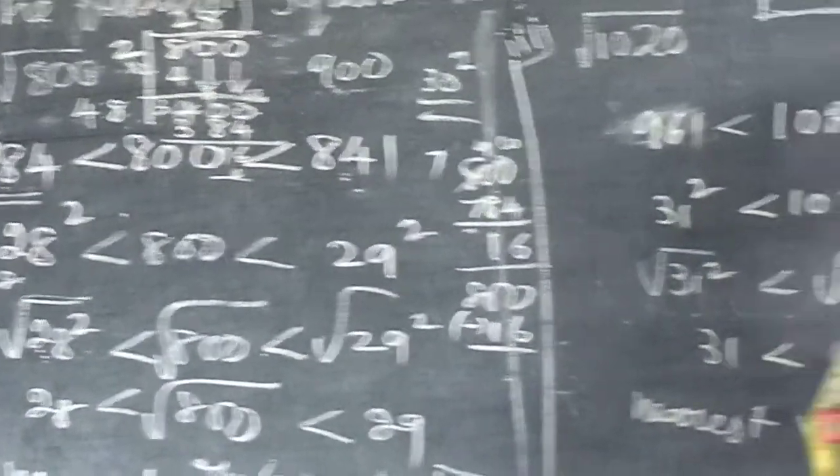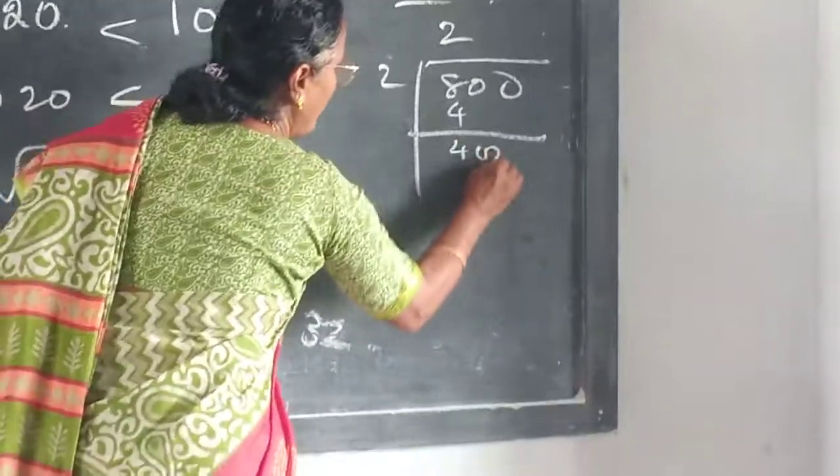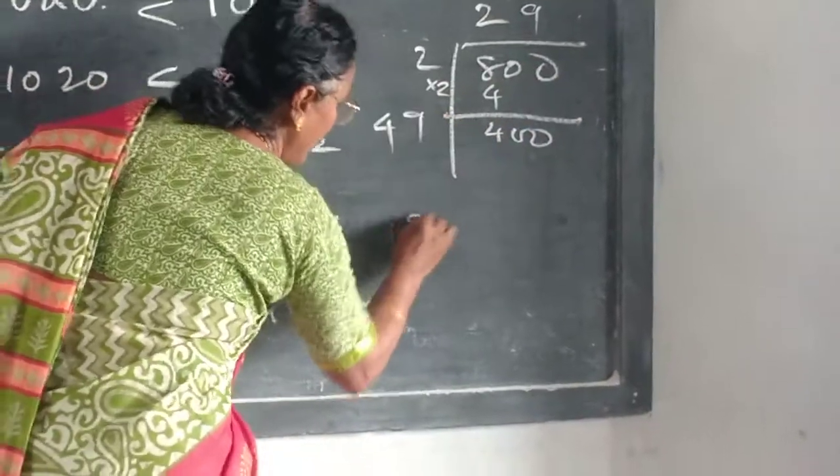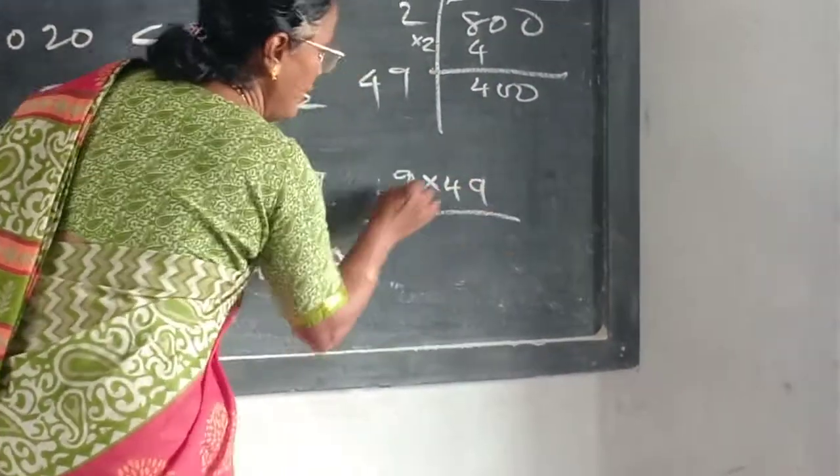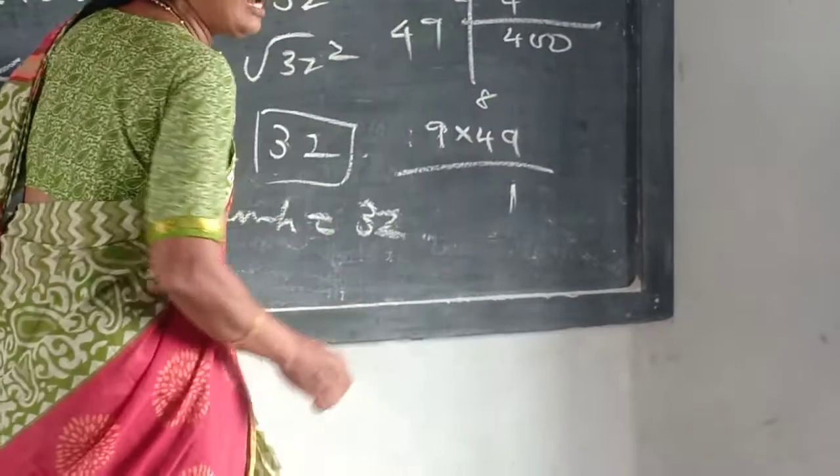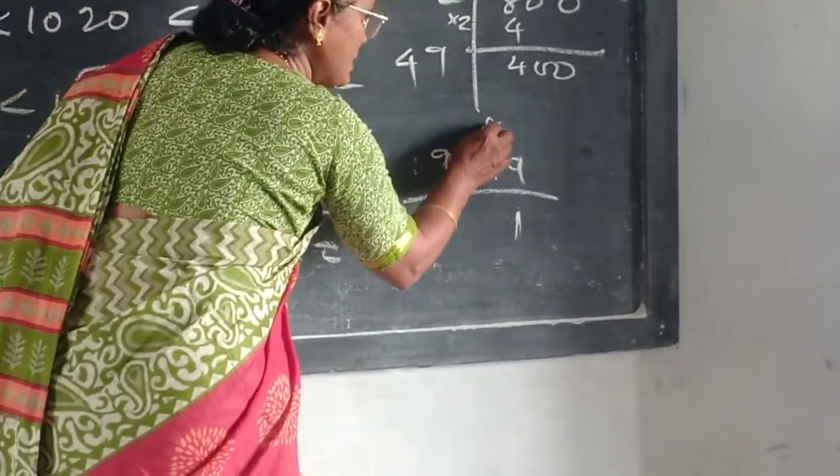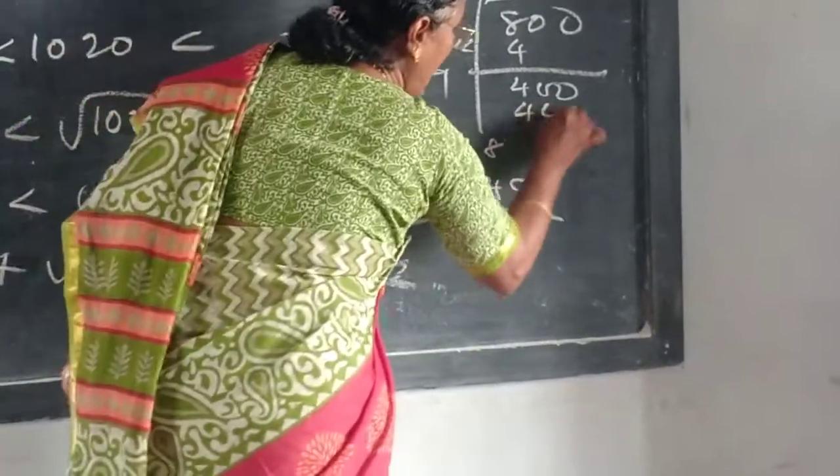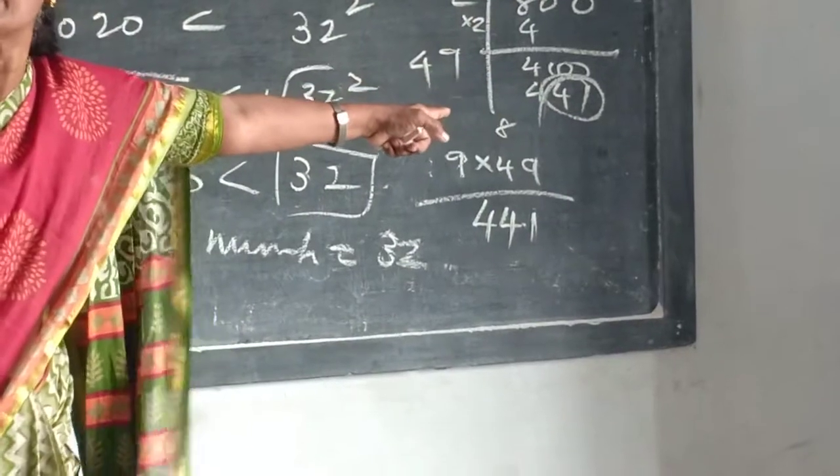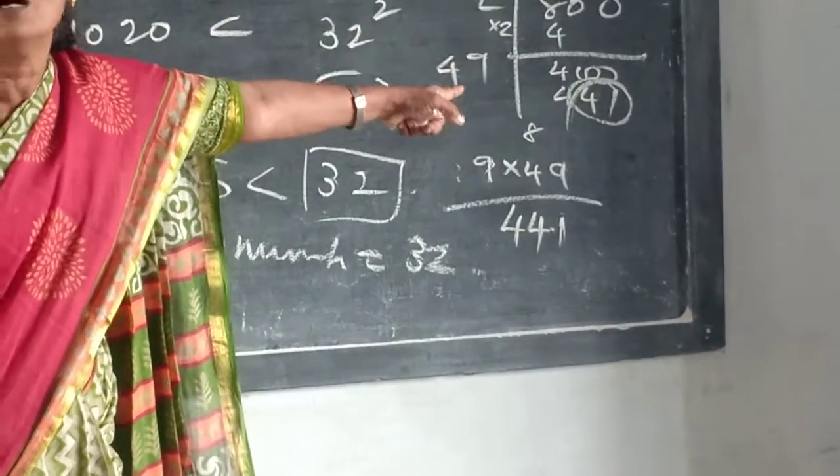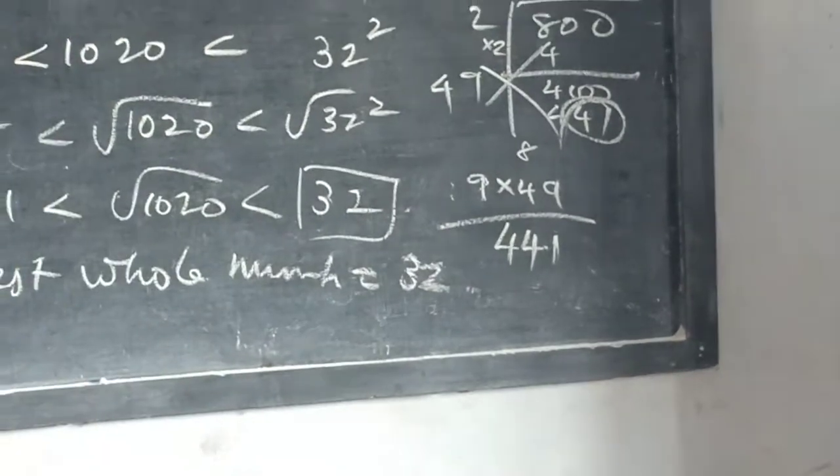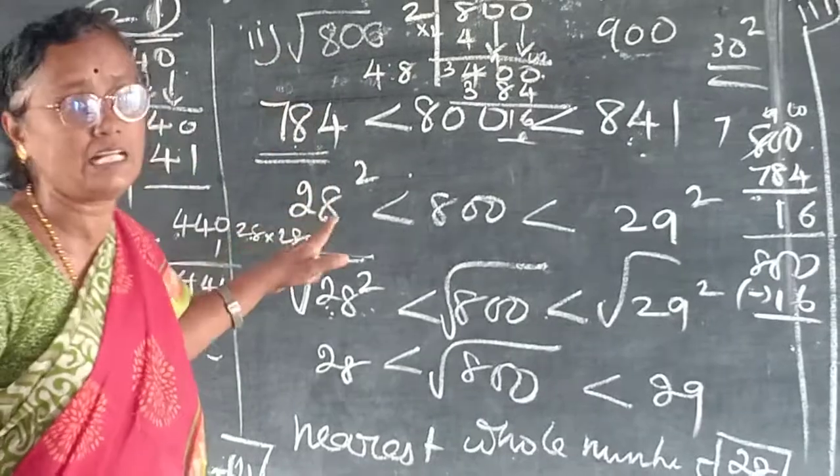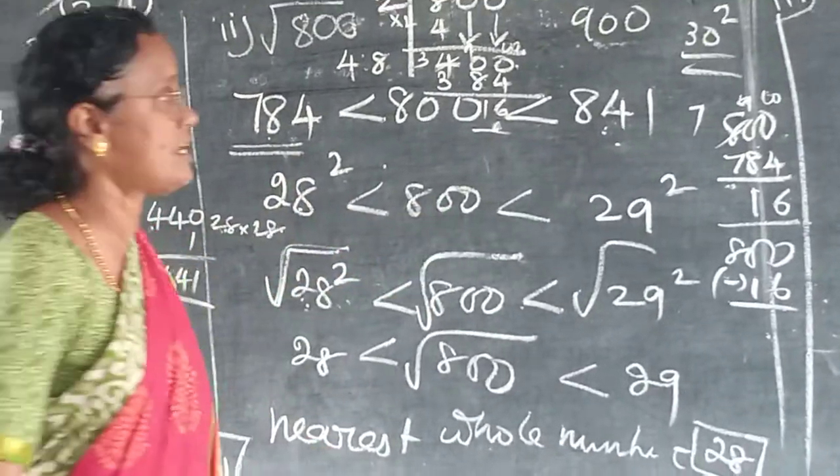While you subtract 816 then you will get which square? 28 square. That is 784. If you put 9 it will exceed. Suppose 9. 9 9's are 81. 8 into 9. 9 4's are 36. 36 plus 4 is 40. 441. How much extra? 41 extra. So it is not possible. So you should not take this. Which one you have to take? 28 you have to take. So 28 is the correct answer.